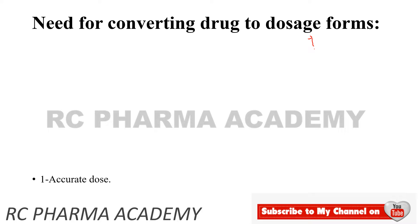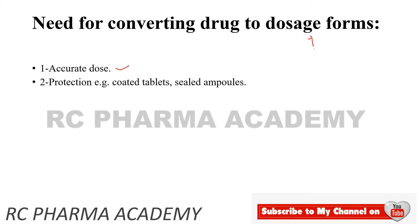Dosage forms are used to provide an accurate dose — for example, 650 mg exactly. They also provide protection, such as in the case of enteric coated tablets, sugar coated tablets, and film coated tablets.